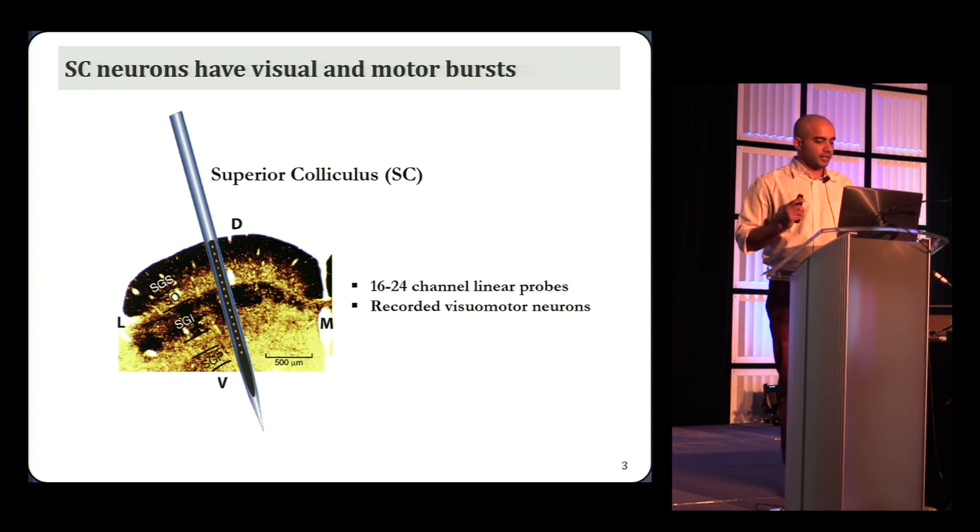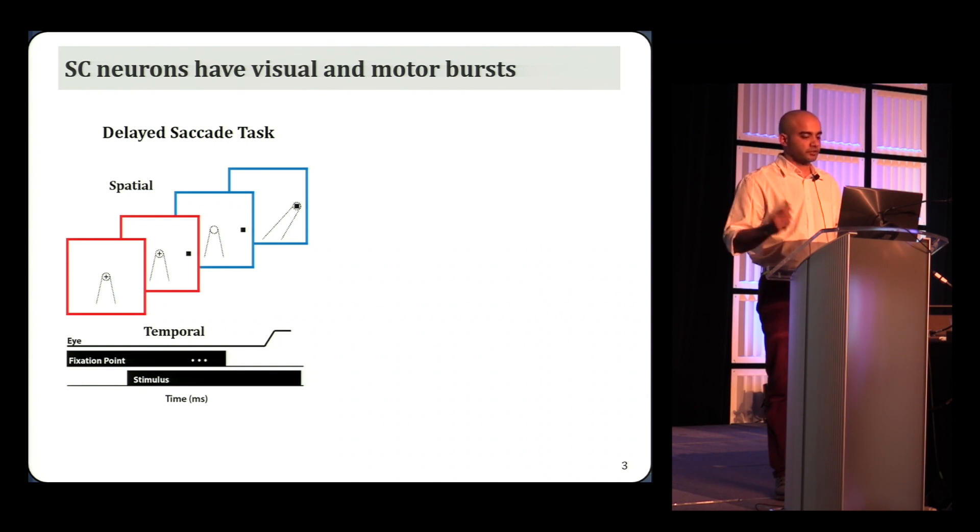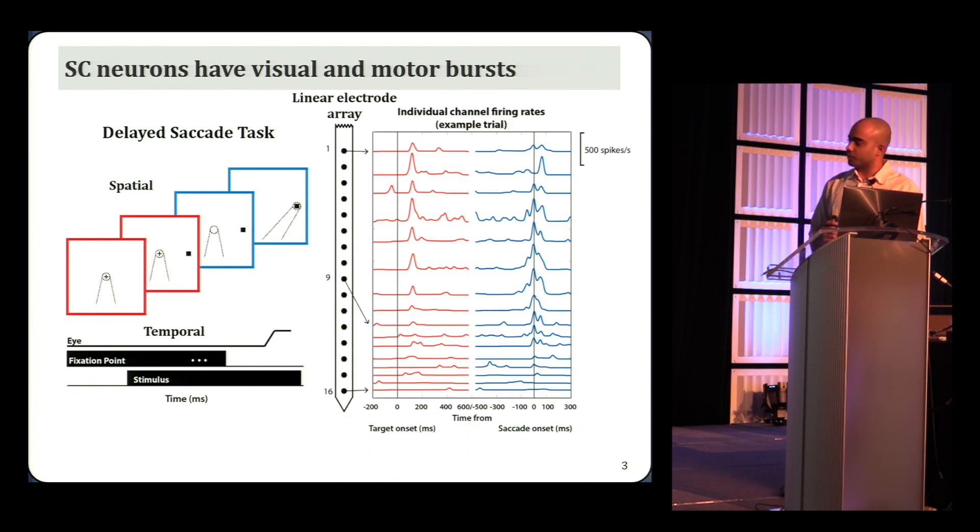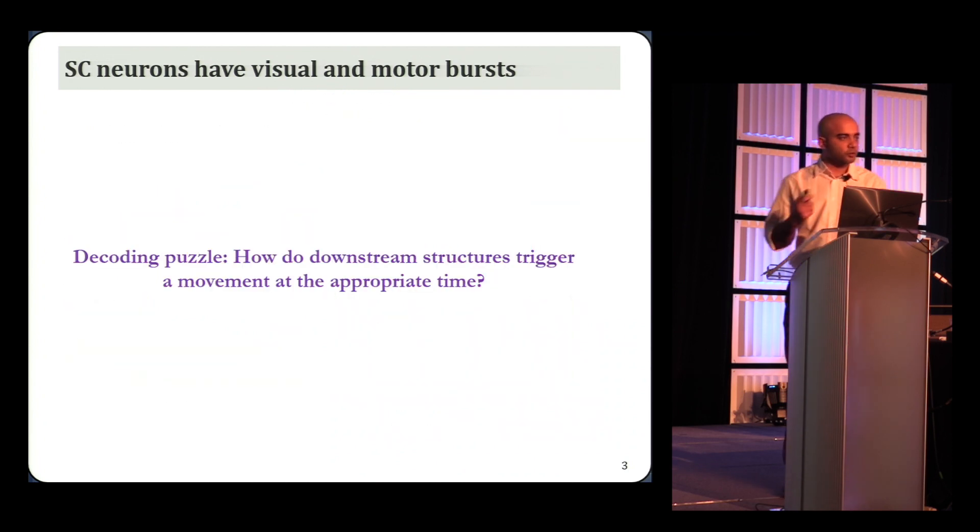We recorded activity during a delayed saccade task. Don't worry about the details. The important feature of this task is that it separates the time of visual input from the time when the movement happens. So you can study the two processes separately. If you look at the activity from all the channels in the linear probe, you see the same pattern as before. These are the firing rates for each channel in each row aligned to the target onset on the left and saccade onset on the right for an example trial. Most of these neurons burst for both the onset of a visual target and during the movement. And many of these are the same neurons that project directly to the brainstem. So this poses a decoding puzzle. How does a downstream structure listening to the activity of these neurons know when to generate a movement?